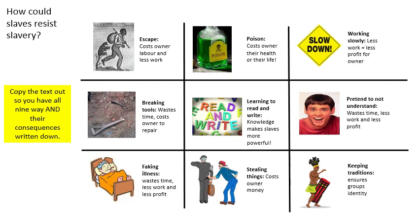Ninth is keeping traditions. Slaves tried, in whatever little free time they had, to keep their African identities alive — singing, drumming, and those sorts of things. It was important for keeping their morale up, a way of saying: yes, we are in this awful situation, but let's keep ourselves going, remain positive, and remember our African heritage and traditions. Those are nine key ways slaves resisted. Copy out the text as a grid, list, or table, making sure you write each method and its consequences.